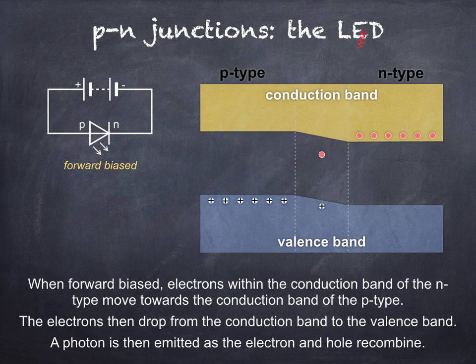When an electron recombines with a hole, a photon of light is emitted, as shown in the animation.